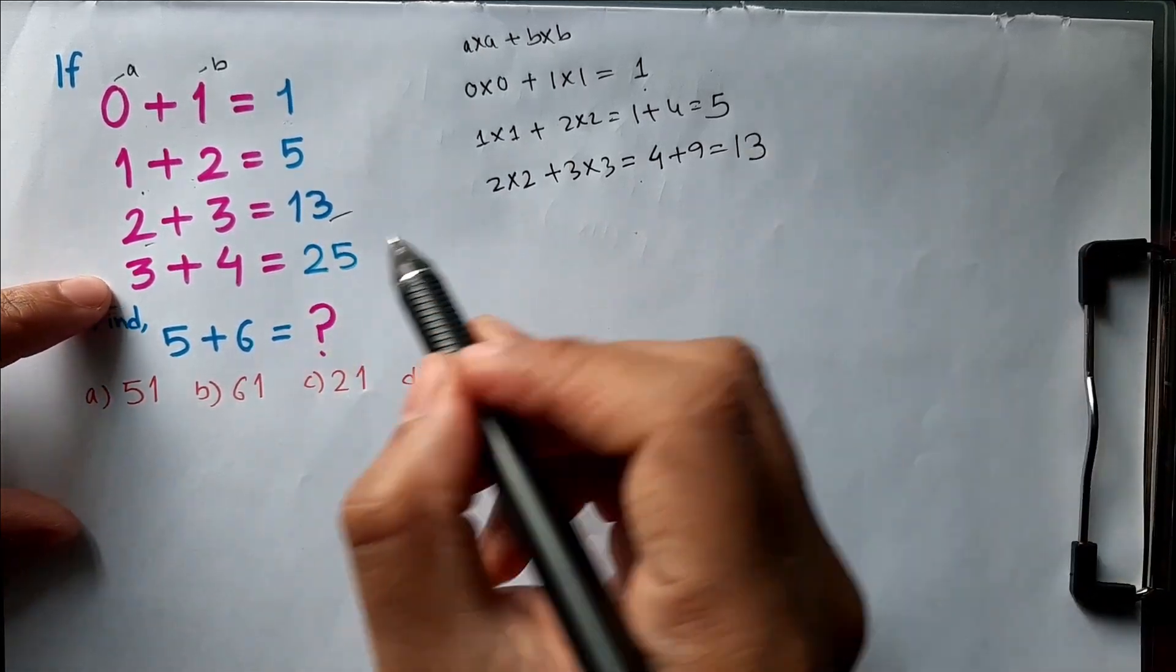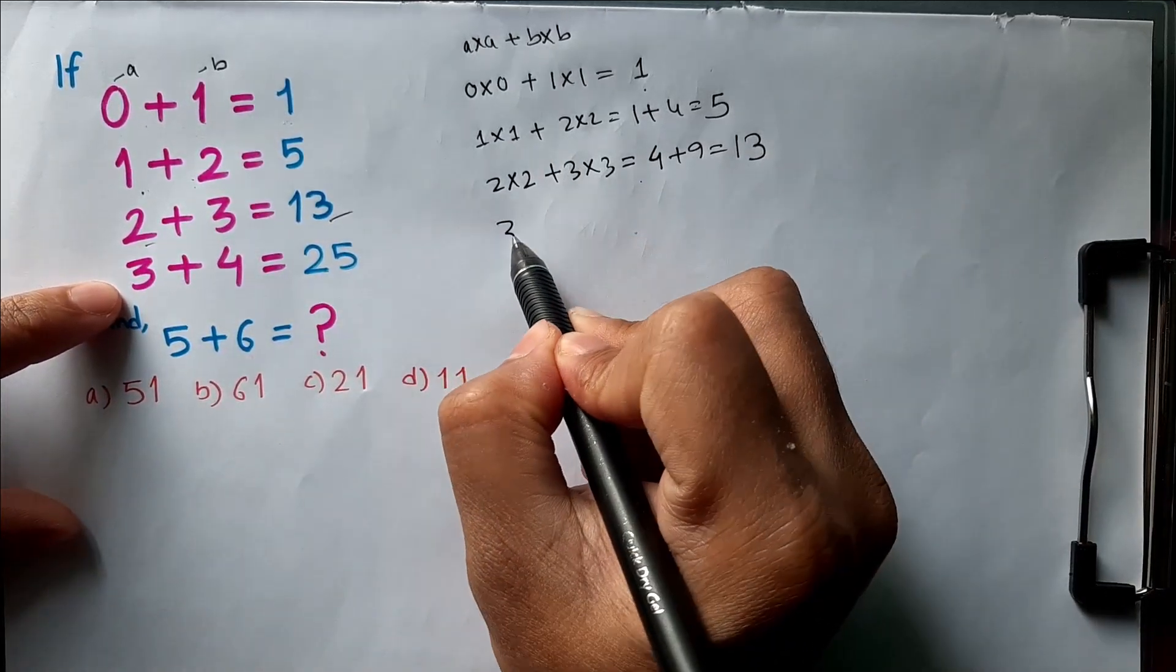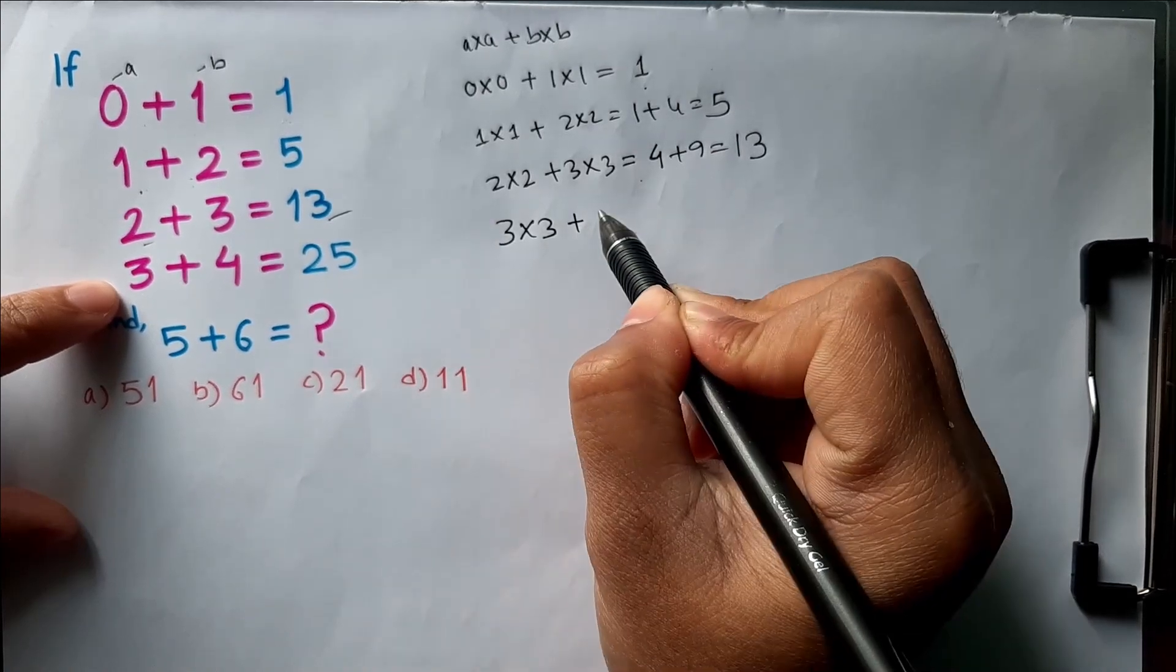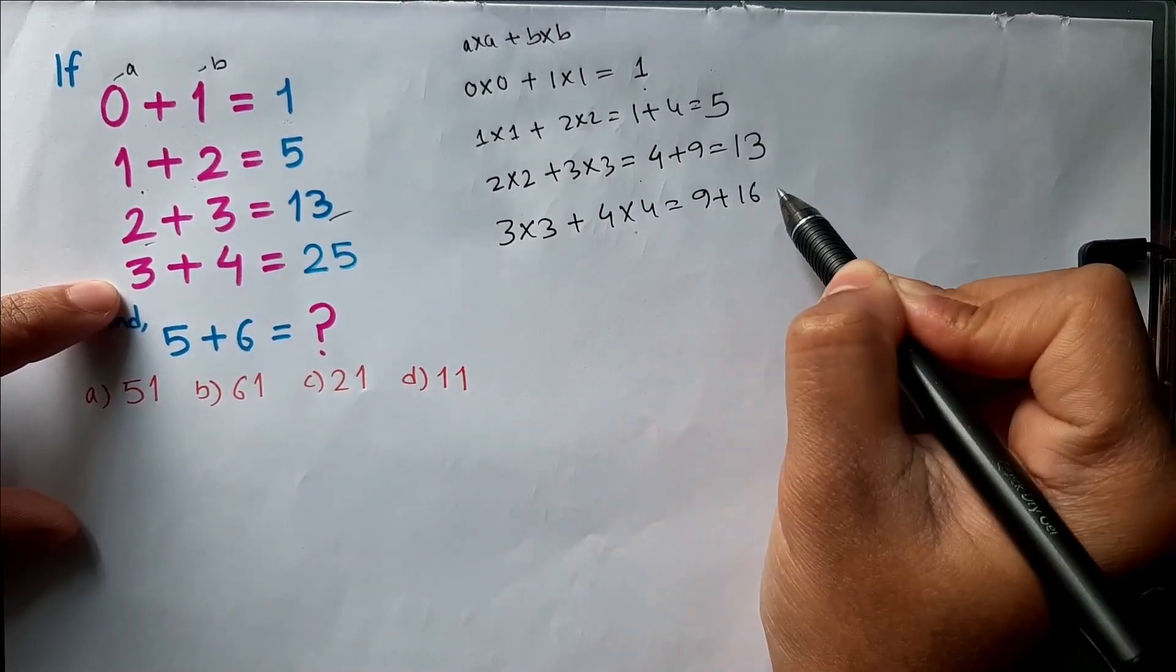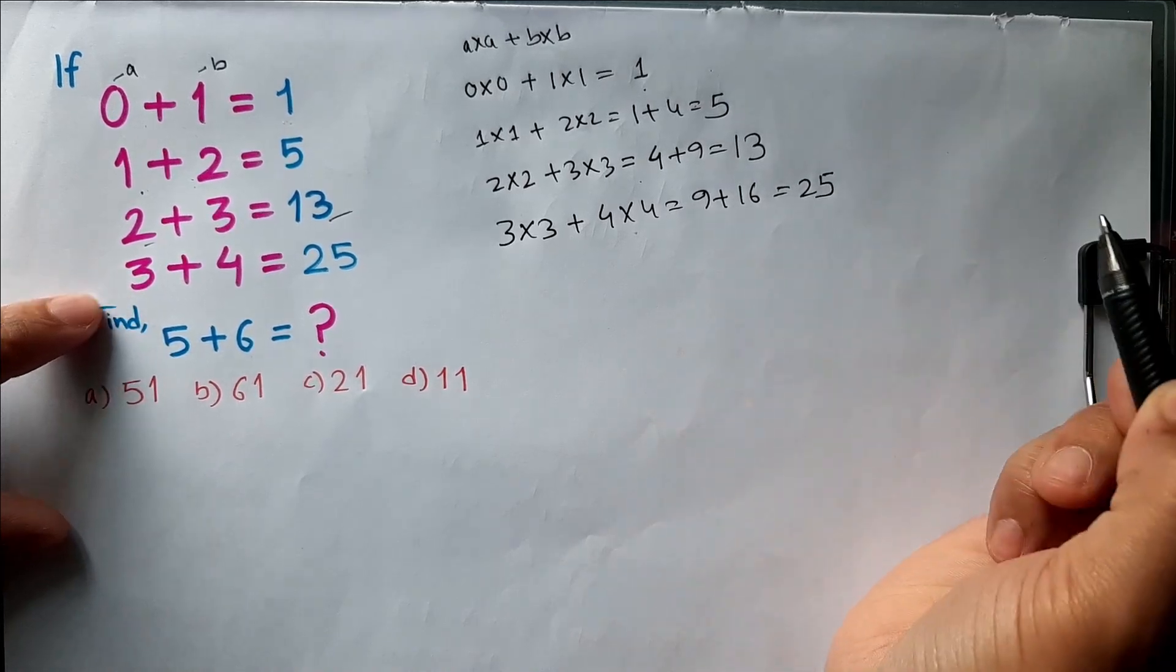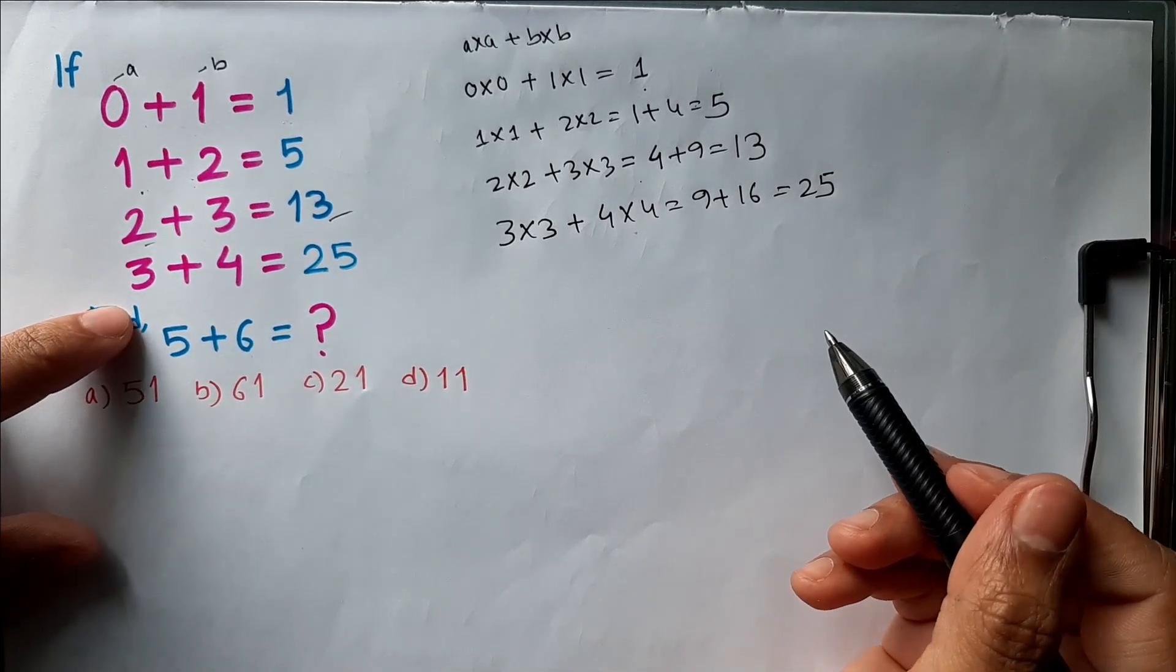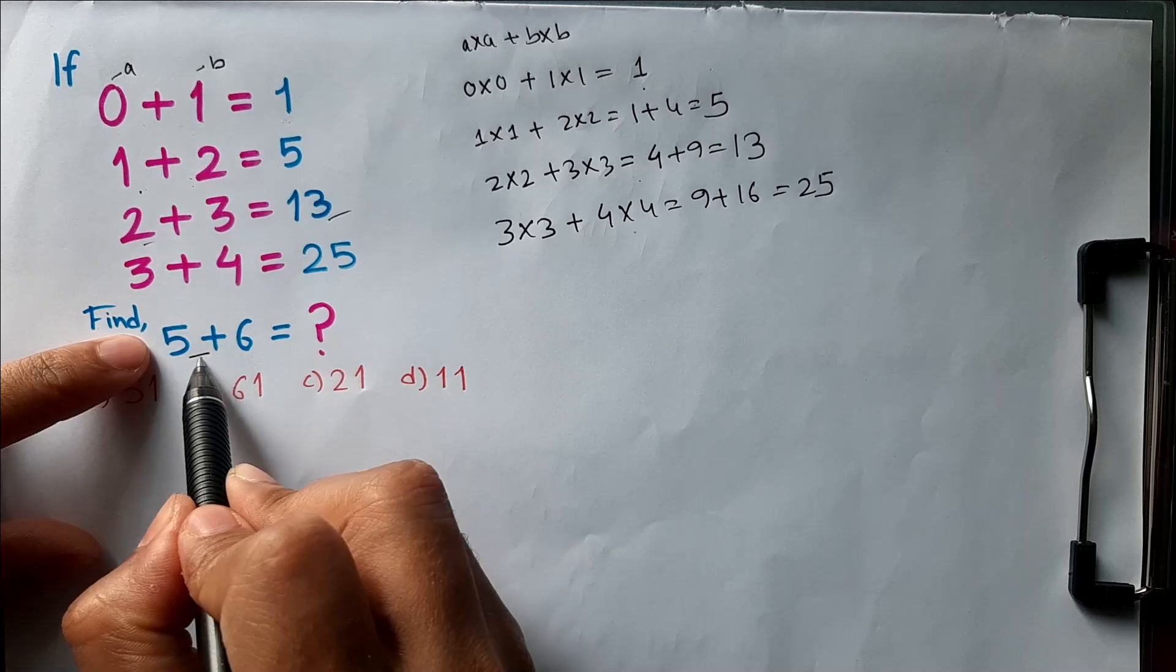So this is the logic behind this. You have to do it like this. Next, 3 × 3 + 4 × 4, we will get 9 + 16, that is 25. Okay, similarly for this one we have to do